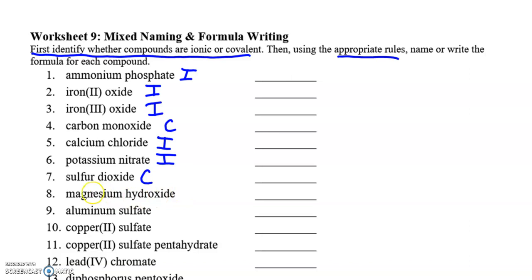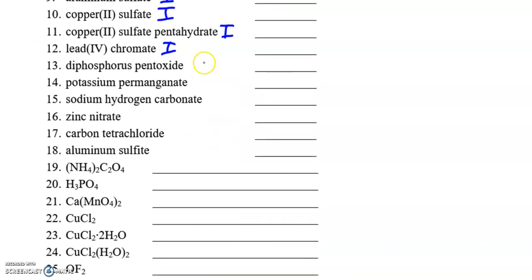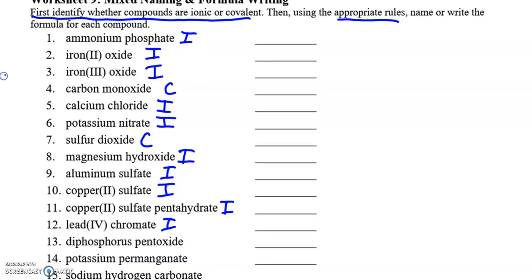Potassium nitrate has a metal and a polyatomic ion in it, so potassium nitrate is ionic. Sulfur dioxide has two non-metals, so it's covalent. Magnesium hydroxide — metal, polyatomic ion — it's ionic. Aluminum sulfate is also ionic, it's got a metal and a polyatomic ion. Lead chromate — metal and a polyatomic ion — that's ionic. Diphosphorus pentoxide is going to be covalent because it's got two non-metals in it. Potassium permanganate — and I think I'm going to run out of time on this video.